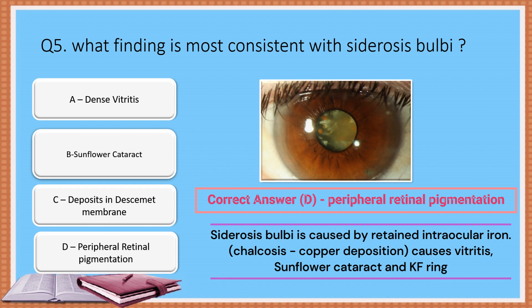The correct answer is Option D: Peripheral retinal pigmentation. Siderosis bulbi is caused by retained intraocular iron particles. All the other options — vitritis, sunflower cataract, and deposits in Descemet's membrane — are caused in chalcosis, which is caused by copper deposition.